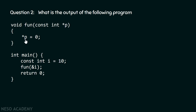Inside this function, we have the statement `*p = 0`. Here the star is acting as an indirection operator. Writing `*p` means we are accessing the location pointed by pointer p. Since p contains the address of variable i, with the help of this indirection operator we are accessing the content of variable i and trying to replace it with the value zero. Variable i previously contained value 10; we are trying to update it to zero.